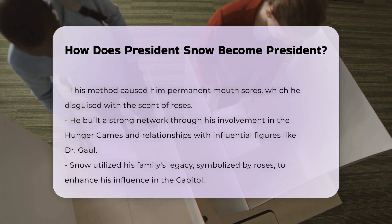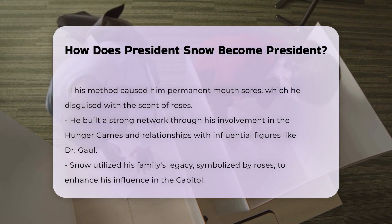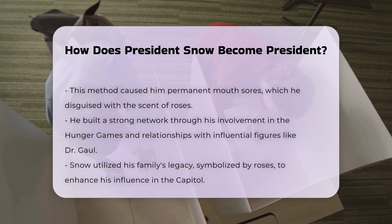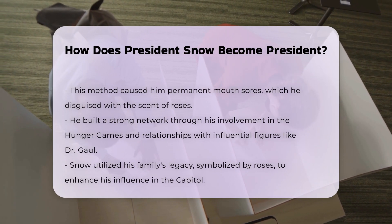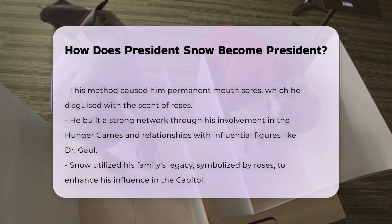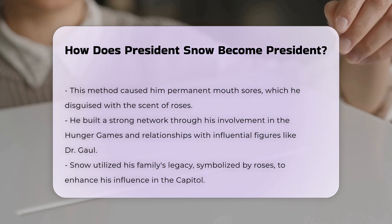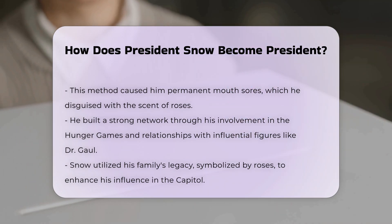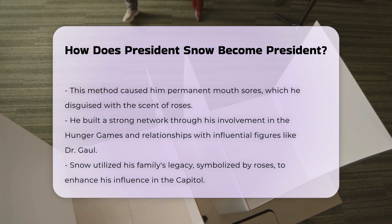Building connections and influence: Snow's involvement in the Hunger Games and his connections with key figures like Dr. Gaul, the game maker, helped him build a strong network within the capital. He also used his family's legacy, symbolized by roses, to further his influence and communicate with other powerful individuals.